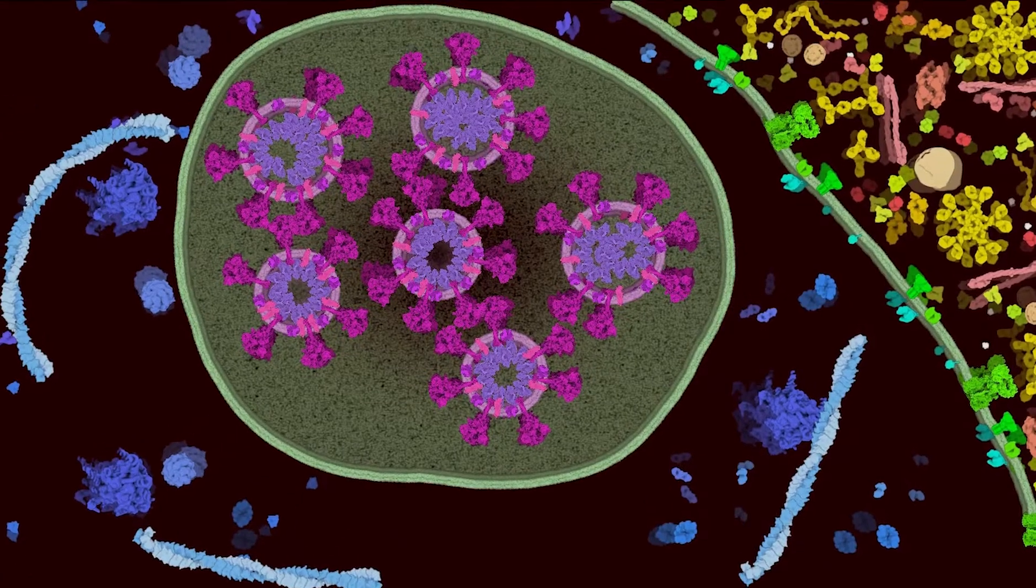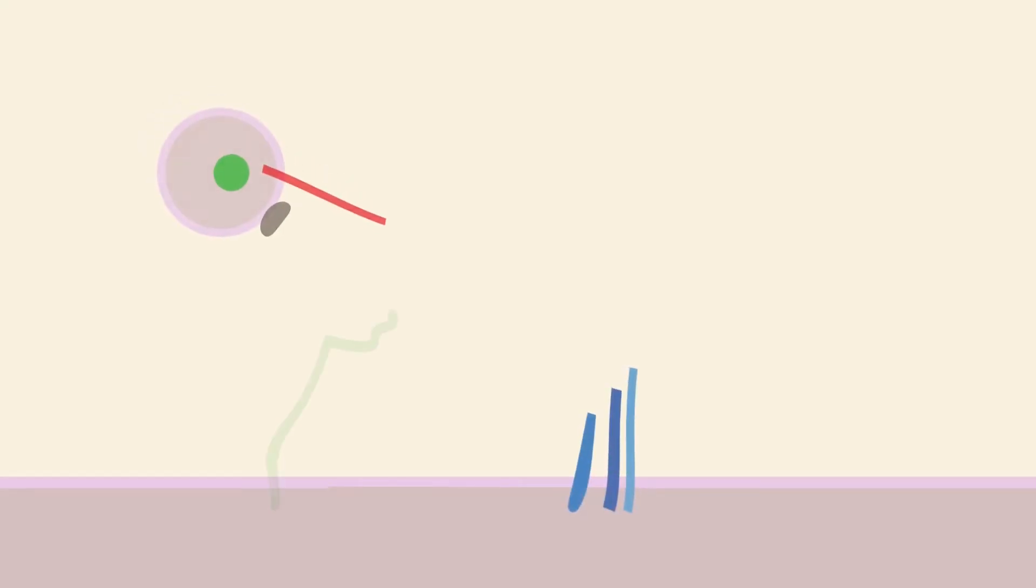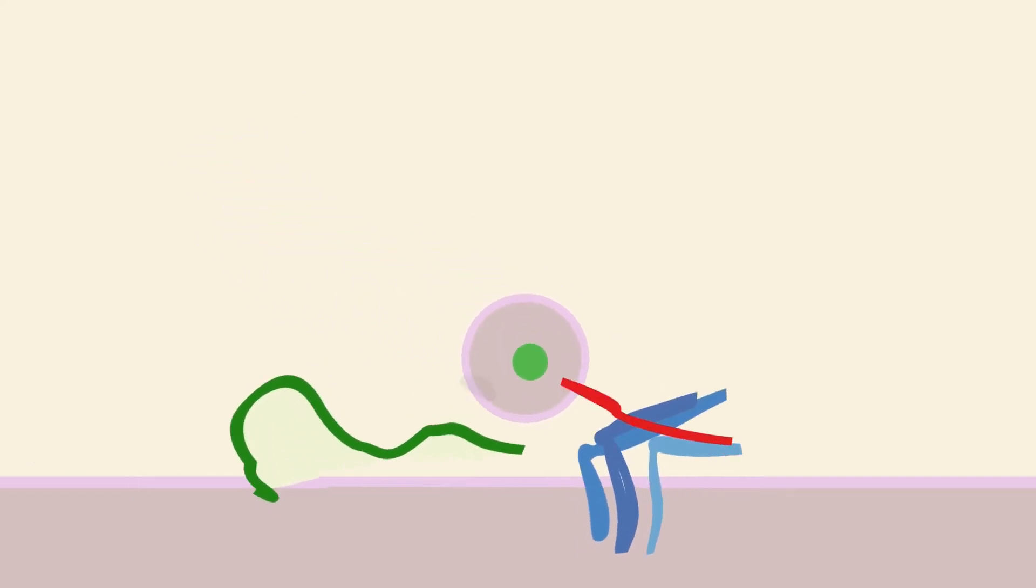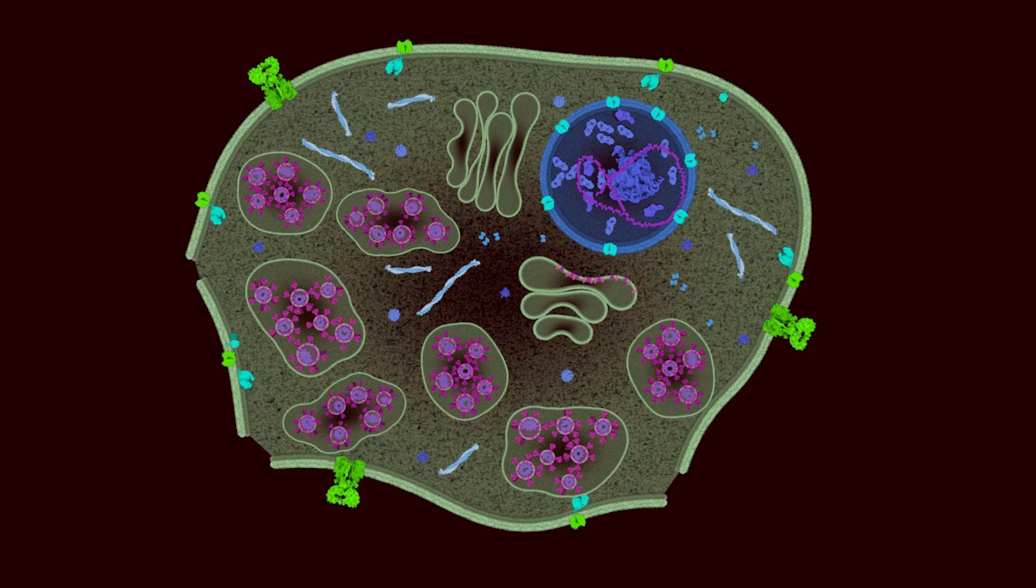These vesicles can exit the cell through exocytosis in the early stages of infection, or burst with the cell membrane in later stages.